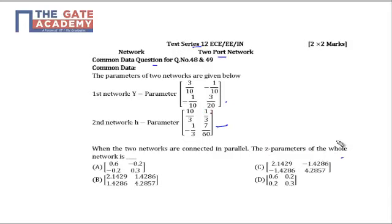We know that when two networks are connected in parallel, to find the Z parameter, we first need to convert the H parameter into the Y parameter.